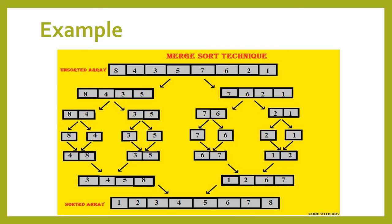Here we have an unsorted array with elements 8, 4, 3, 5, 7, 6, 2, and 1. It is divided into two parts using the formula mid equals low plus high divided by 2. Here low is 0 and high is 8, so 0 plus 8 divided by 2 is 4.